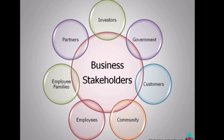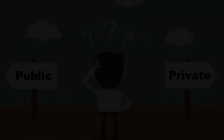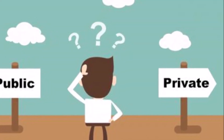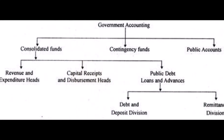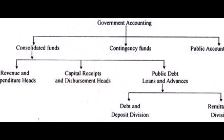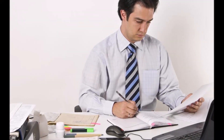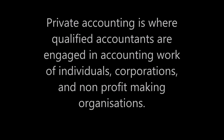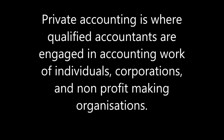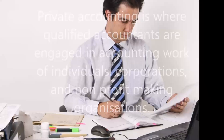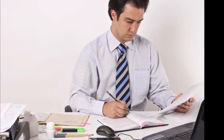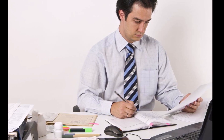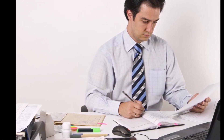I will classify accounting into three major branches: public accounting, private accounting, and government accounting. We will start with private accounting. Private accounting is where qualified accountants are engaged in accounting work of individuals, corporations, and non-profit-making organizations. Persons employed in private accounting normally work only for one business. Accountants here may specialize in fields like financial accounting, cost accounting, among other fields.